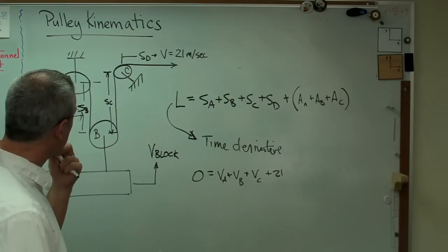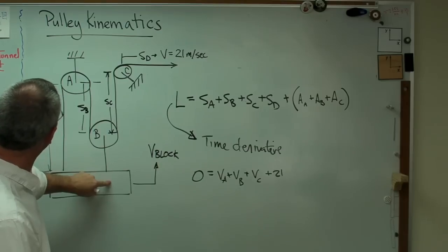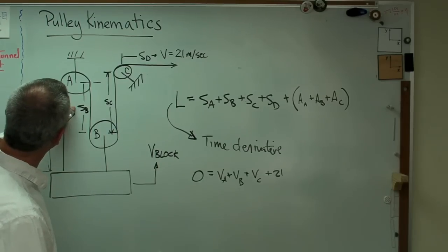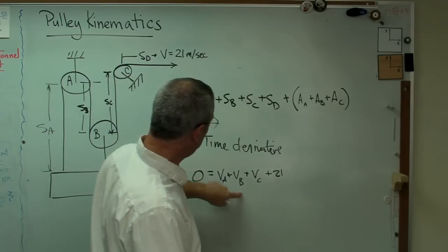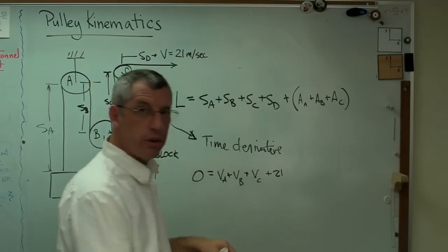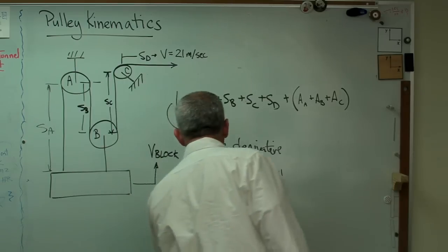What do I know here? If that block's moving up, and this pulley is fixed to that block, SA, SB, and SC change at the same rate. Therefore, all of those each equal V block. So let's do this.